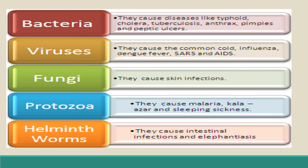Harmful microorganisms cause diseases not only in human beings but also in animals and plants. Bacteria cause typhoid, cholera, tuberculosis, anthrax, pimples, and peptic ulcer. Viruses cause common cold, influenza, chickenpox, SARS, AIDS, and the recent COVID-19. Fungi mainly cause skin infections like ringworm and athlete's foot. Protozoa cause different diseases like malaria, kala-azar, sleeping sickness, and amoebic dysentery.